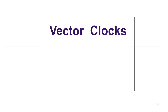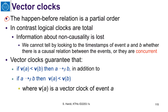We will now talk about vector clocks. As we have seen, the happen-before relation is a partial order. So in contrast, Lamport logical clocks are total. This means that information about non-causality is lost — we cannot tell, by looking at the timestamp of events A and B, whether there is a causal relation between the events or if they are concurrent.